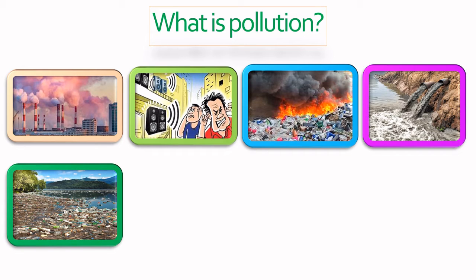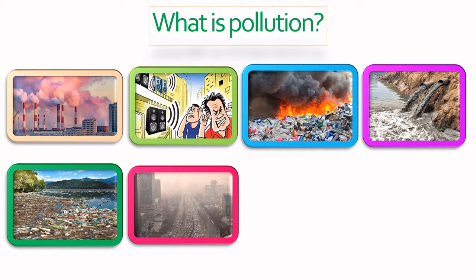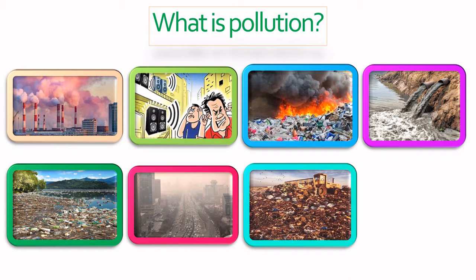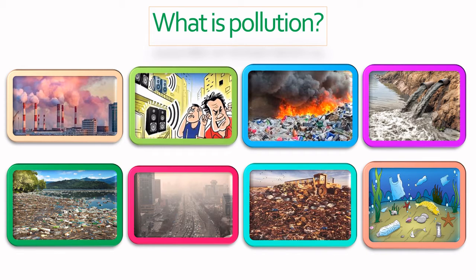In the fifth image we can see plastic and other waste materials are thrown in water bodies such as lakes, rivers and ponds. In the sixth image there is a lot of traffic on the road and due to which the air is not clean. In the seventh image a lot of garbage is being dumped on the land. In the last image plastic and other waste materials are thrown in the ocean and water animals are affected. These examples show how our environment is getting polluted.